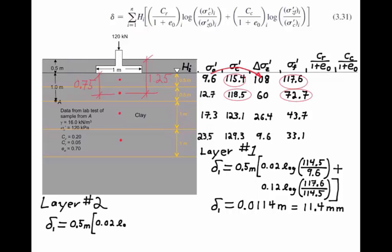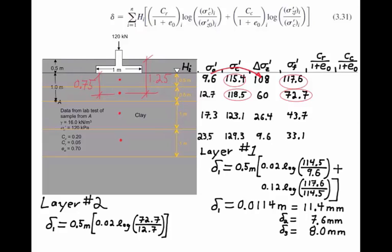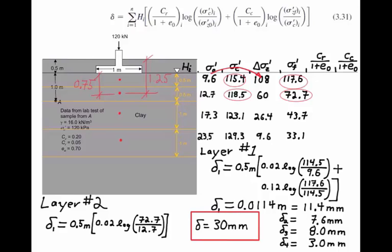For layer number 2, the final vertical stress of 72.7 kPa is less than the pre-consolidation stress of 118.5 kPa. So we're loading only on the reload curve and only need the first term of equation 3.31. The settlement is log(72.7/12.7) × 0.02 × 0.5 m, which gives 7.6 millimeters. Similarly, the same calculations for layer 3 give 8 millimeters of settlement and layer 4 gives 3 millimeters of settlement. Adding all layers together, the total settlement is 30 millimeters under the center of the footing.